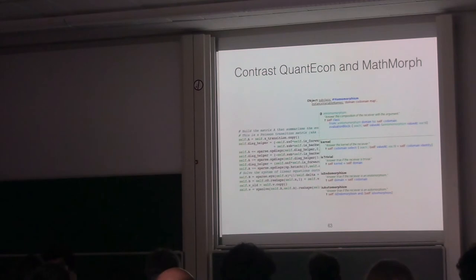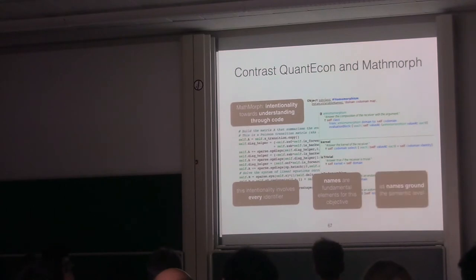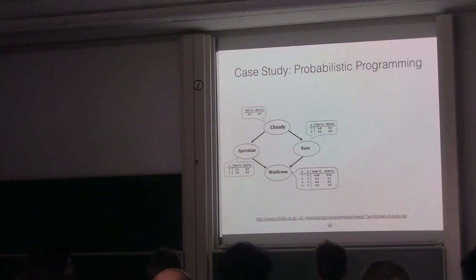This creates understanding of the concept of homomorphism, and this may yield more knowledge discovery moments. We can contrast MatMorph to QuantEcon. Aside the coding styles, which are very different, in MatMorph we see an intentionality towards understanding through code. This intentionality involves every identifier. To me, the names are fundamental elements of this objective because the names ground the semantic level.